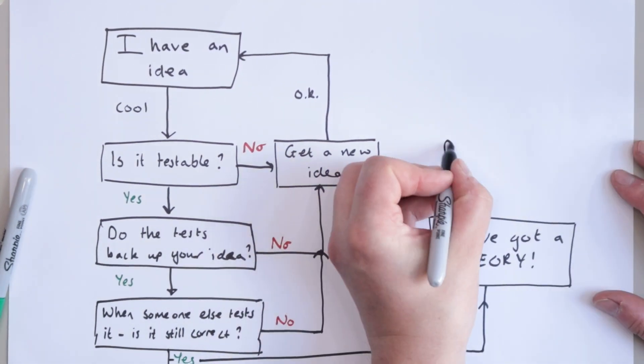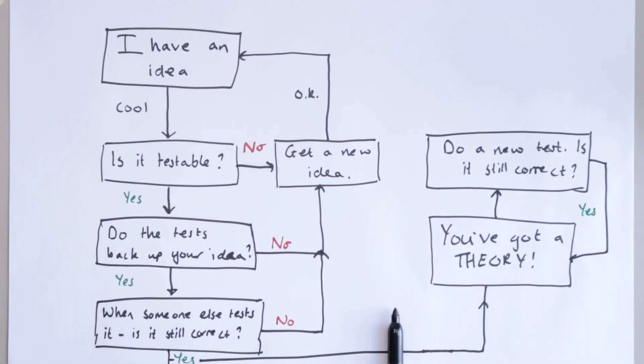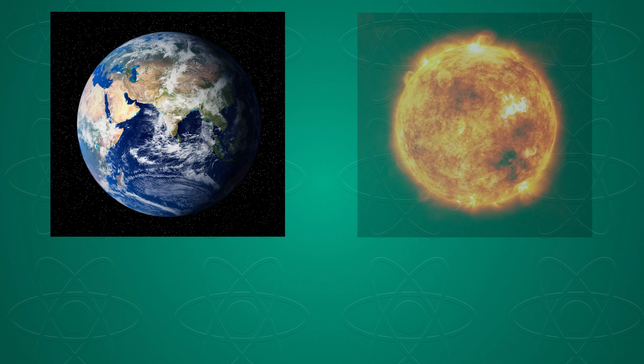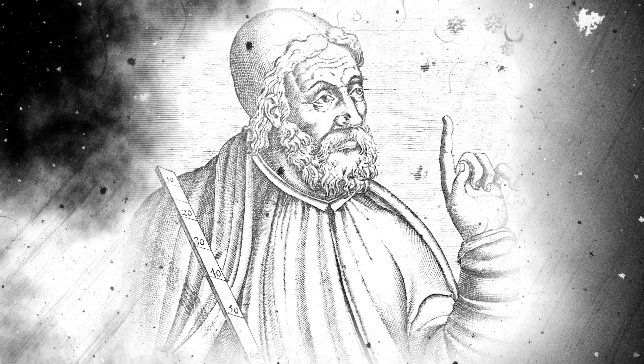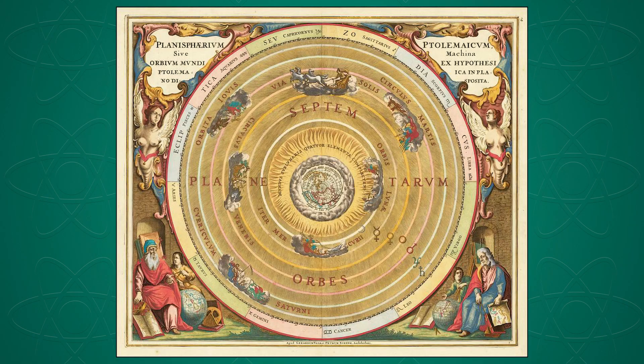A theory is a scientific idea that has been repeatedly tested and found to be true, and a good theory can also explain future results that might be collected. An example of this is the geocentric theory versus the heliocentric theory of the Earth and Sun. The geocentric model was championed and refined in incredible detail by the mathematician Ptolemy way back in the second century. He used observations of the stars and planets to put together a model for the solar system where the Earth was at the center and everything else orbited around it.